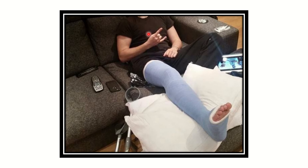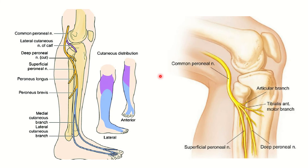First of all, let's look at the cast. We can see the cast applied up to the mid-thigh, given for the fracture of the tibia and fibula, causing immobilization. With immobilization of the limb, the most affected area is where there is close contact with the bones. Here we can see the fibula and the common peroneal nerve is in direct contact with the bone.